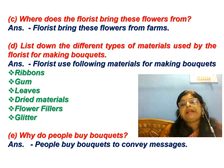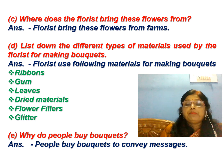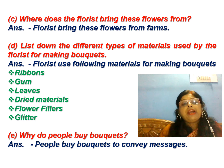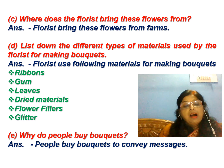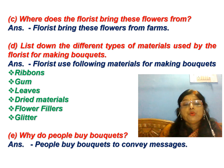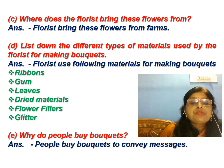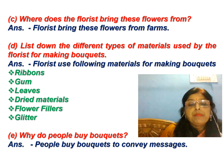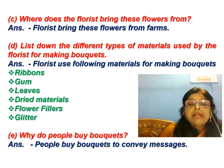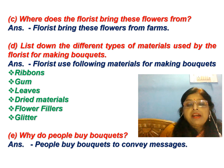List down the different types of material used by the florist for making a bouquet. All of you are interested in making bouquets — you give your friends a bouquet on their birthday and sometimes greet guests with bouquets. The materials used for making a bouquet are ribbon, gum, leaves, some dried materials, flower fillers, and glitter. People buy bouquets to greet someone or convey good messages.